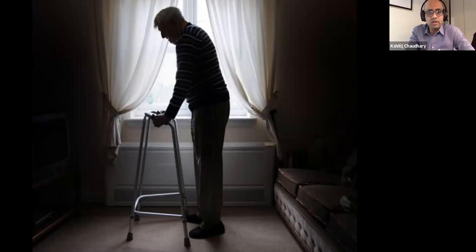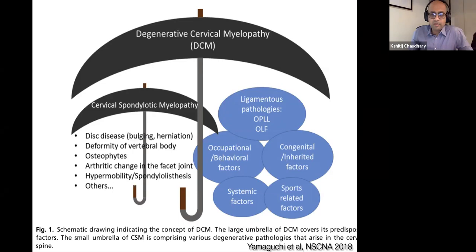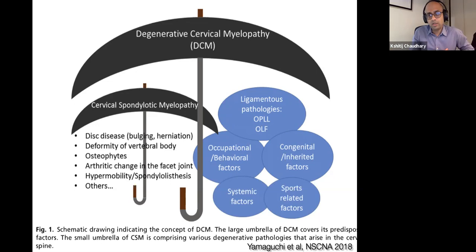There is now a new concept proposed of degenerative cervical myelopathy, which is a broad umbrella diagnosis. It includes cervical spondylotic myelopathy and also other pathologies that may not necessarily be purely degenerative but have some genetic basis with a degenerative phenomenon added, like OPLL and ONF. Today's talk is more focused on cervical spondylotic myelopathy, which is much more common.